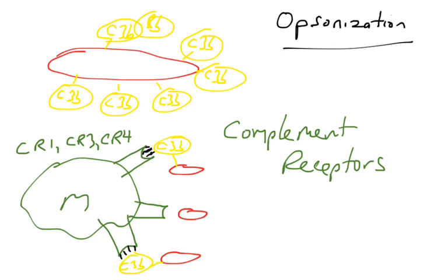And they have names like CR1, CR3, and CR4. So a macrophage, we'll learn about the receptors on the surface of macrophages, and now we're learning about complement receptors on the surface of macrophages.